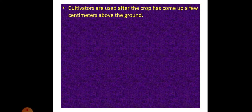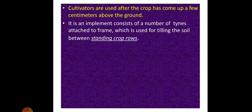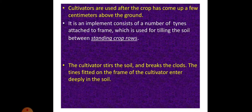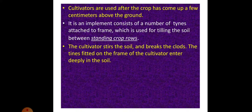Cultivators are used after the crops have come up a few centimetres above the ground. It is an implement consisting of a number of tines attached to a frame, which is used for tilling the soil between standing crop rows. The cultivator stirs the soil and breaks the clods.